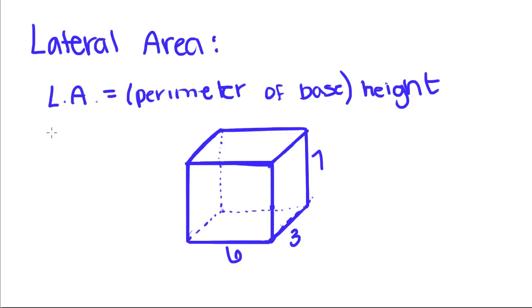Okay, for lateral area, you take the perimeter of the base and you multiply it by the height. When we find lateral area, we're just finding, let me get my shader so I can show you, we're just finding the area of these blocks that go up and down. We're not going to find the area of this top block or this bottom block. Just the lateral area that stands straight up and down.